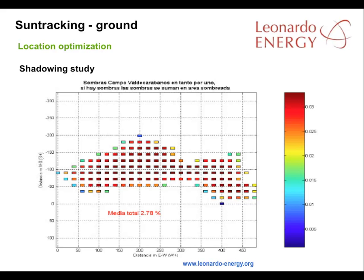Here are the results of the shadowing study for the panel rows at Val de Carabanos. The results indicate an average shadowing of 2.78%.